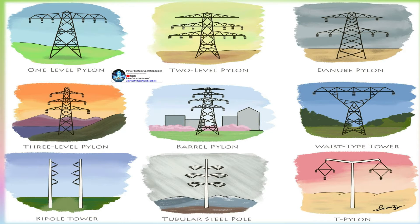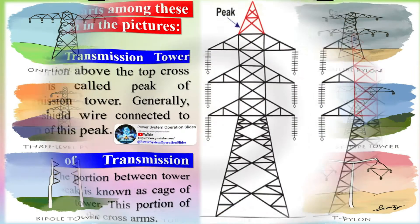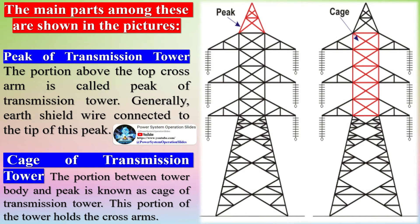The transmission tower body is the distance from the lowest crossarm of the tower to the ground. It is necessary for towers as it provides the height required for ground clearance.